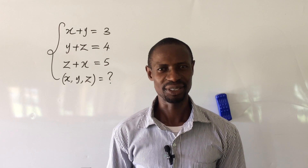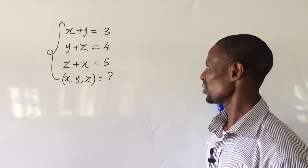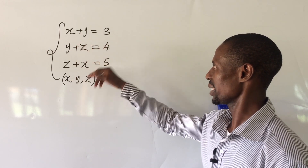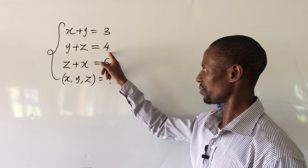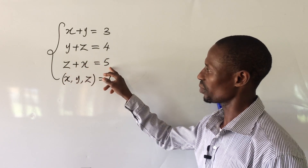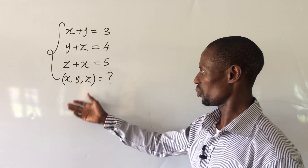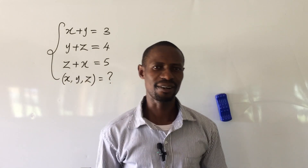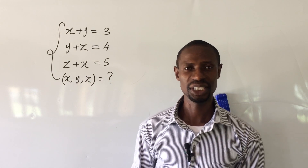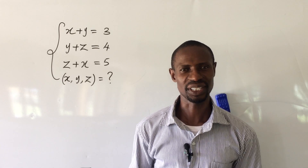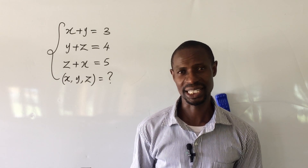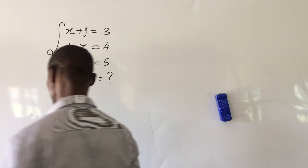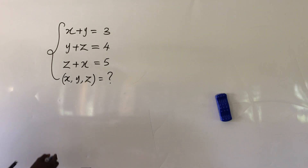Welcome everyone to my channel. Today we have a set of three equations: the first one says x plus y equal to 3, y plus z equal to 4, z plus x equal to 5. What will be the value of x, y, and z? Before going to this challenge, if you are new to this channel, kindly subscribe and turn on the bell notification. My name is Jake, this is Online Math TV where we learn mathematics every day.